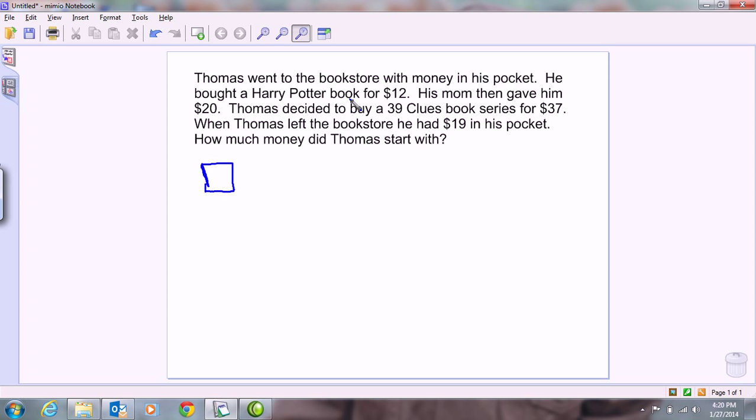And we see that the first thing he did was bought a book for $12. So when you buy something, your money goes away. So we'll write minus $12. Then his mom generously gave him $20. So when somebody gives you money, the quantity of money you have increases or goes up. So we are going to add $20. Then Thomas decided to buy a book series for $37. So his money went away, so we will subtract $37. And we see that when he left the bookstore, he had $19 in his pocket. So we'll do equals 19, because this is what he left with.